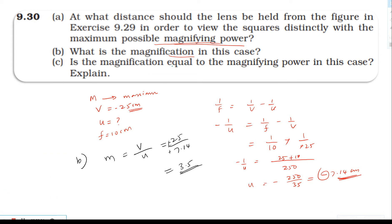For part c: Is the magnification equal to the magnifying power in this case? The magnifying power is 25 by 3.5, which equals 7.14, while the magnification is 3.5. So the magnification is not equal to the magnifying power.